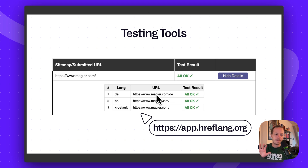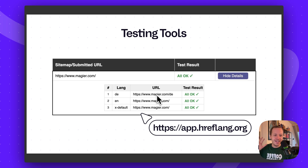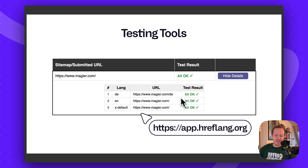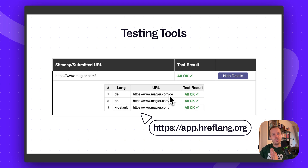Another thing I wanted to mention: how do you test if your implementation is right? You can use testing tools like app.hreflang.org — you just throw in your URLs and then you can see if the test results are okay.